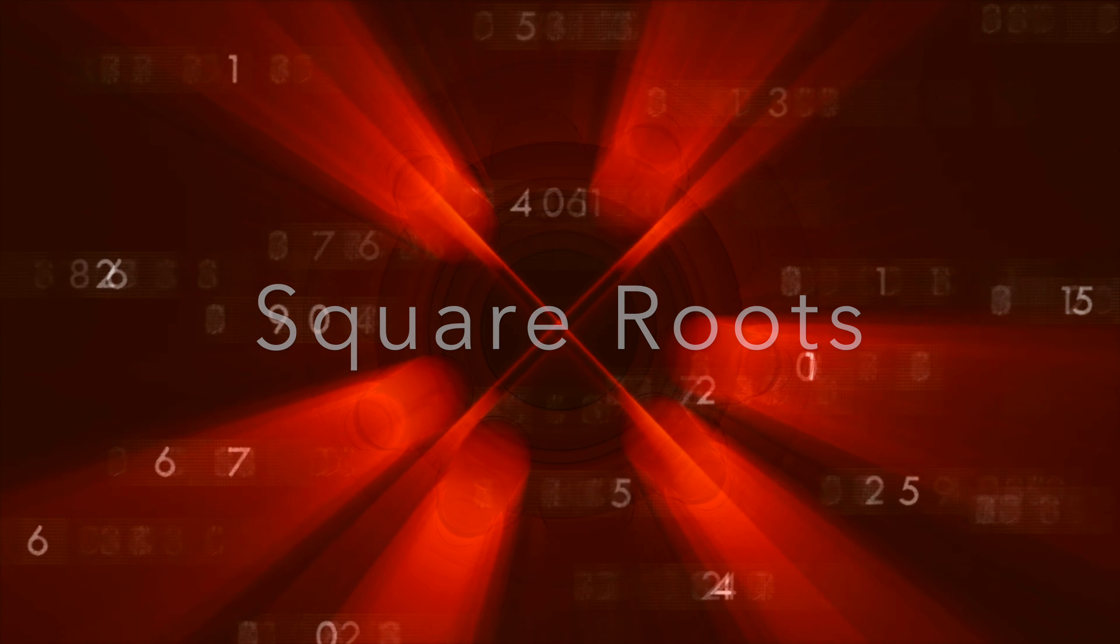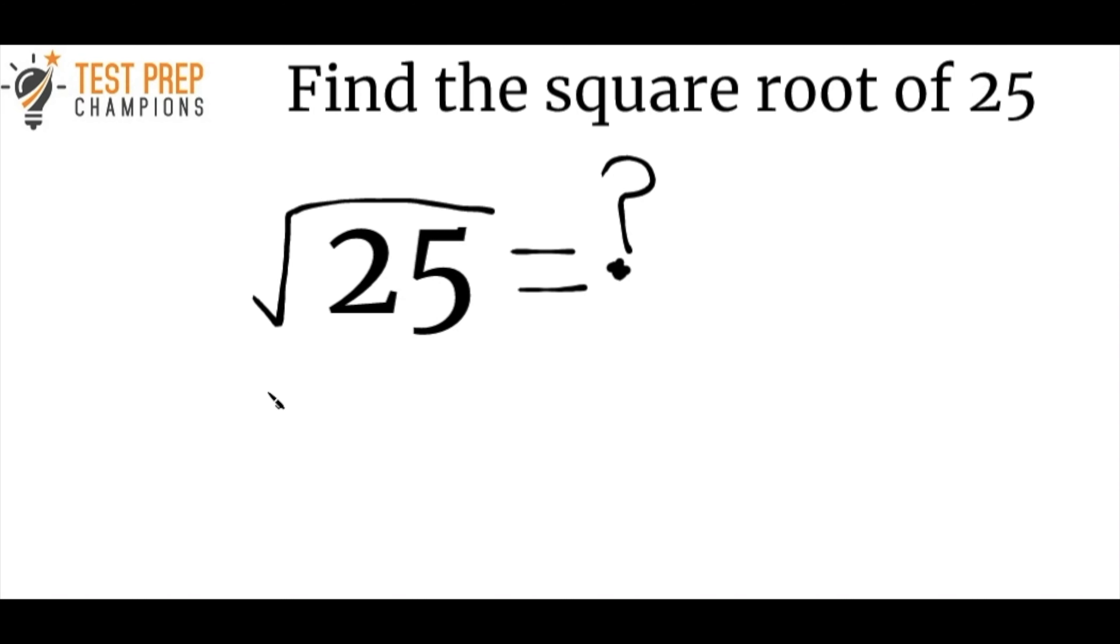But what about square roots? We're going to use 25 as an example and we want to find the square root. So the first thing to understand is that this symbol here, this bracket that's surrounding the 25 is what we call a square root symbol and that tells us to take the square root.